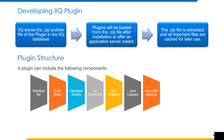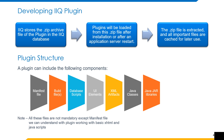What can be included in the plugin structure? Following the defined path, you can include these components: the manifest file, build files, database scripts, UI elements, XML artifacts, Java classes, and Java libraries — all according to requirement. However, the manifest file is mandatory. For a basic plugin, you can develop just a UI page and a manifest file, create the plugin, install it in IIQ, and test it. That process will be shown in coming slides.